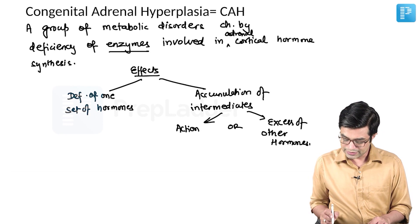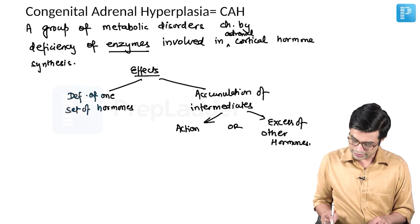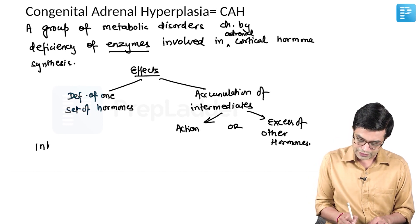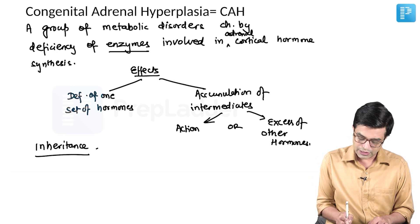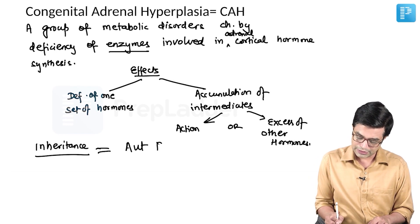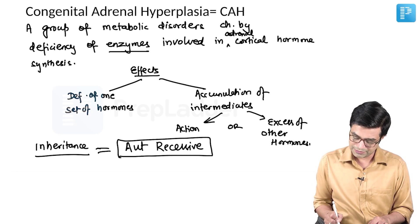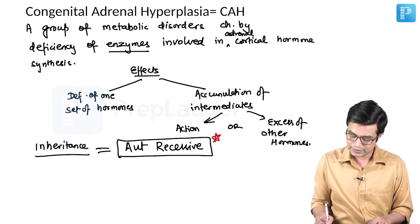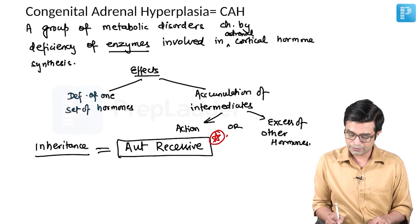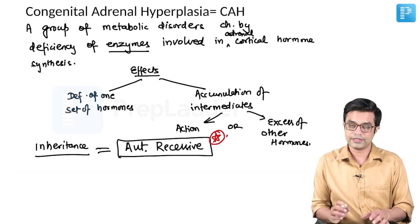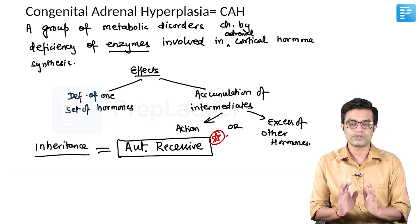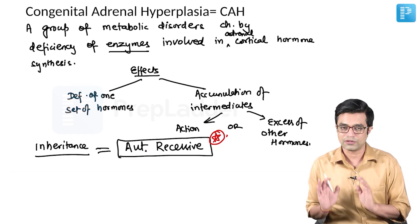In congenital adrenal hyperplasia, an important thing to remember: virtually all of them show autosomal recessive inheritance. Please remember they are all autosomal recessive. It is a difficult topic, so the speed of speaking has been deliberately decreased. Inheritance: autosomal recessive in all of them.